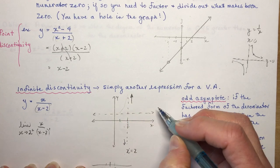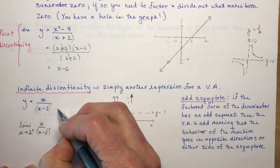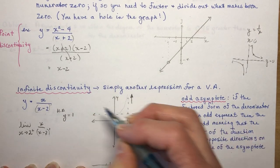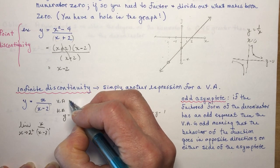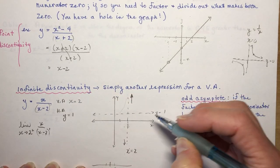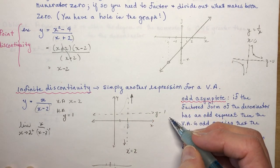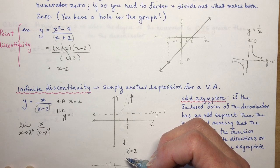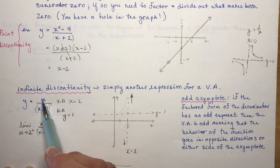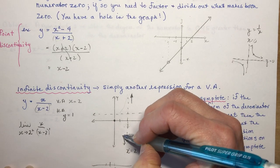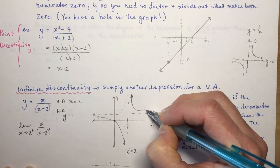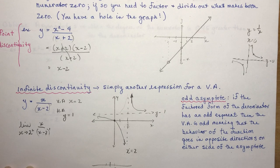The horizontal asymptote is y = 1, which we call HA. Remember it is the equation of a line. The vertical asymptote is x = 2. The function goes up on the right side and down on the left. The x-intercept is found by setting the numerator to 0.